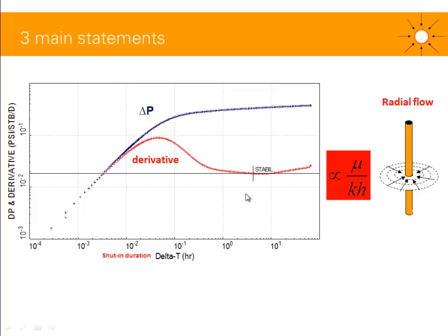So if I have a lower stabilization, I will have a higher KH. If I have a higher stabilization, I have a lower KH. The second main statement: the vertical separation between your stabilization and the delta P plot — between the two curves — is indicative of the skin, or damage, in the well. A higher separation means higher skin; a lower separation means lower skin.